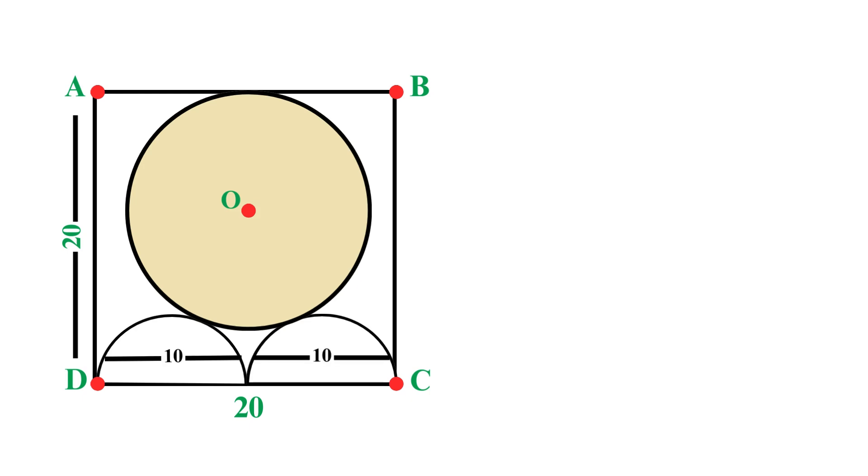And since the radius is half the diameter, each semicircle has a radius of 10 divided by 2, which equals 5 units. Now, let's focus on the right semicircle and add some labels. We label the center of this semicircle as P.